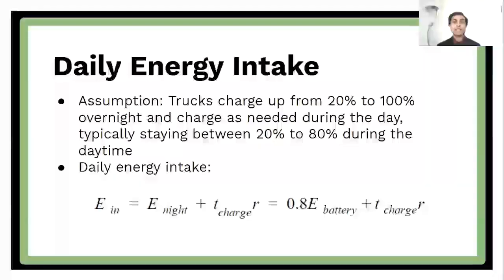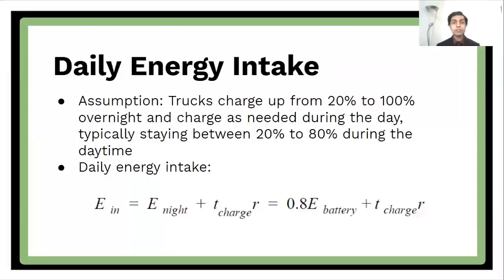So first, looking at daily energy intake, we assume that trucks charge up overnight from 20% to 100% and charge as needed during the day. And these are reasonable assumptions because the recommended range for the truck batteries is 20 to 80%. However, during the night, since there's unlimited time to charge, it makes sense to charge it all the way up to 100%. So given these two things, the daily energy intake is 80% of the battery capacity plus the time spent charging during the day multiplied by the charging rate.